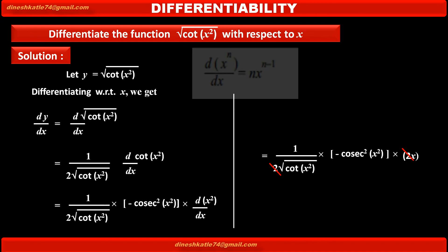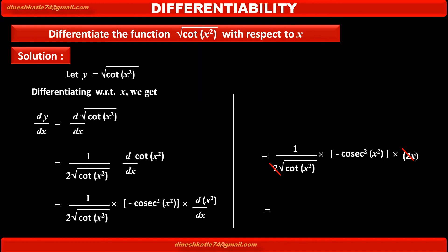Dividing 2 from numerator and denominator and rearranging the terms properly, we get the final answer as minus x into cosec squared x squared upon square root of cot x squared. This is the derivative of the given function, square root of cot x squared, with respect to x.